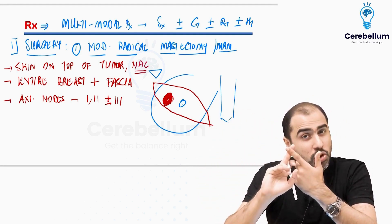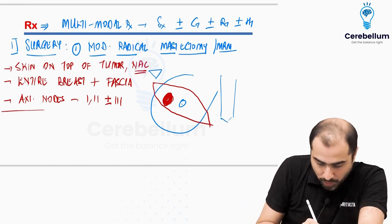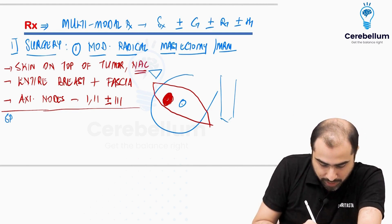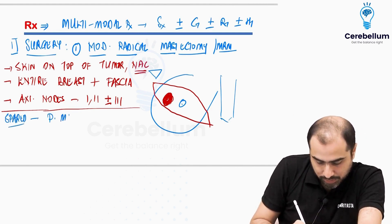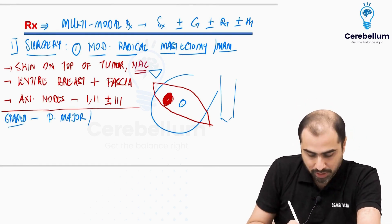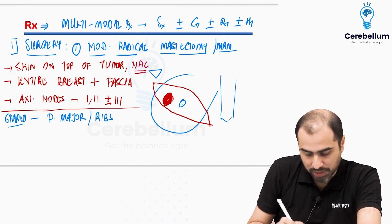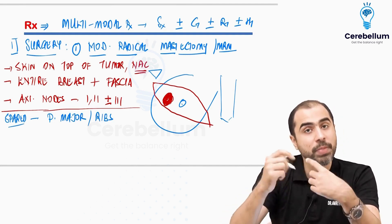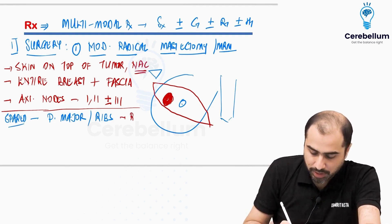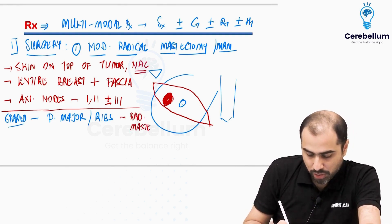Please understand what is not removed. This is more important. This is where we get stuck in the MCQs. What is spared? What is spared is going to be pec major and everything behind the pec major. Pec major, ribs are all going to be spared. If I also remove pec major and ribs, that was the old type of radical mastectomy. Where I also remove the pec major.